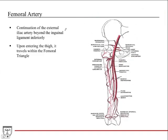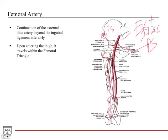The main artery in this region is the femoral artery — it's a continuation of the external iliac artery beyond the inguinal ligament inferiorly. Here's your ASIS, here's your pubic symphysis, and here's your inguinal ligament. Similar to how the axillary becomes the brachial in the arm, it's the same concept — once it gets past the inguinal ligament, it officially becomes the femoral artery.